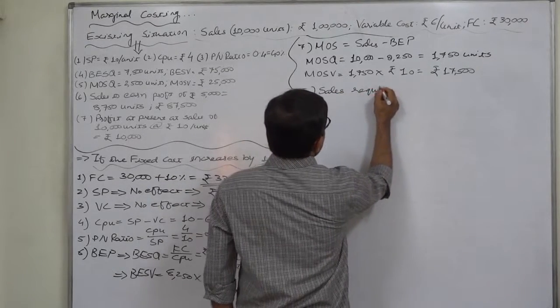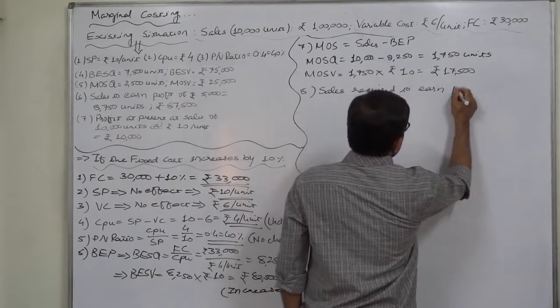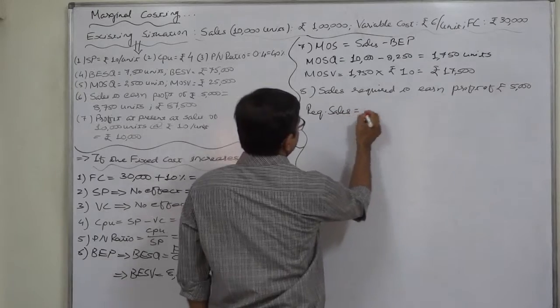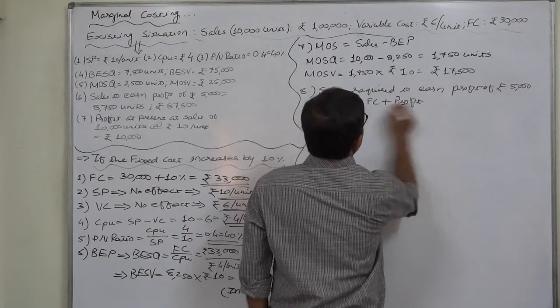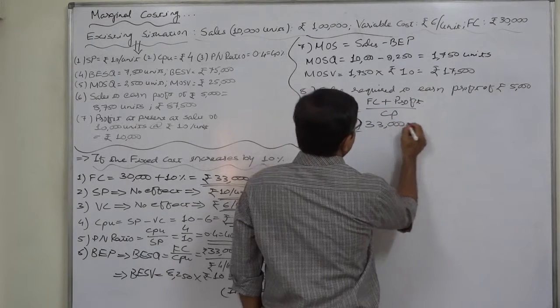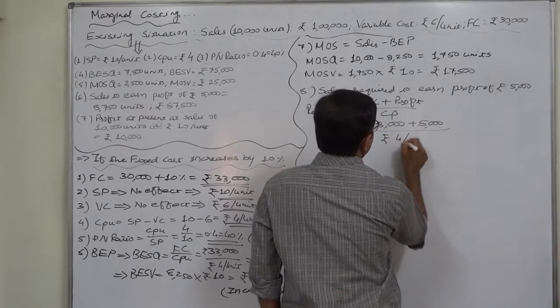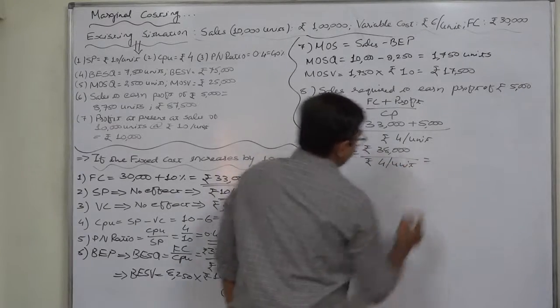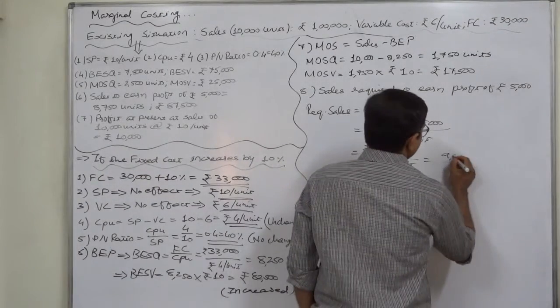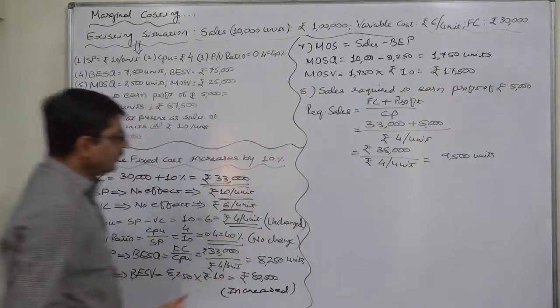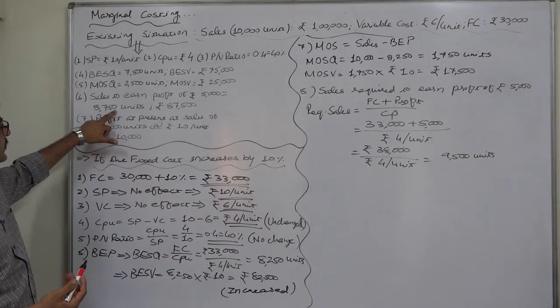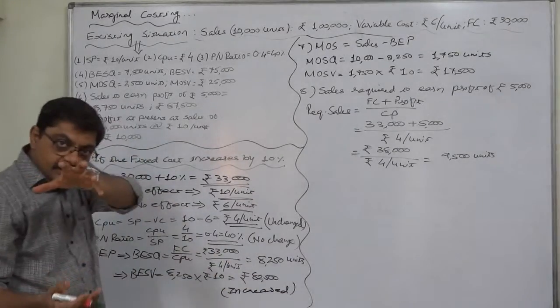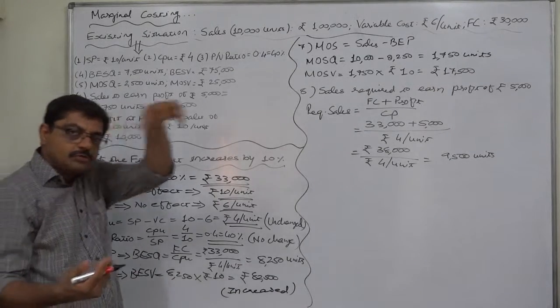Sales required to earn profit of rupees 5,000. As usual, I want to say that this is my favorite formula. Fixed cost revised 33,000 plus desired profit 5,000 divided by rupees 4 per unit. So ultimately it is rupees 38,000 divided by rupees 4 per unit, so now it comes to 9,500 units. Under the existing situation, the sales required to earn profit of rupees 5,000 were 8,750 units. But now it has increased by 750 units. That is obvious because that 750 units from margin of safety have gone to the breakeven quantity.